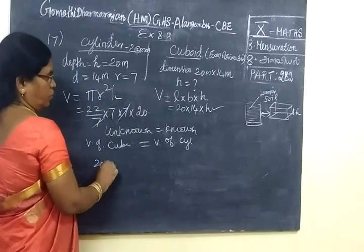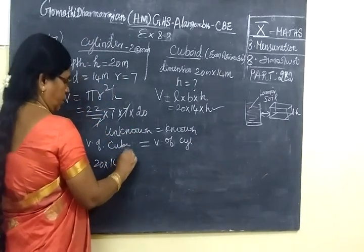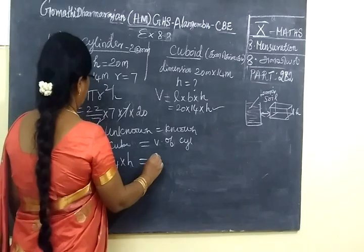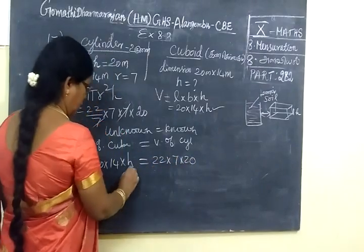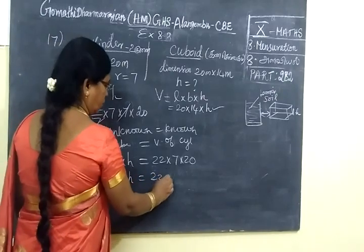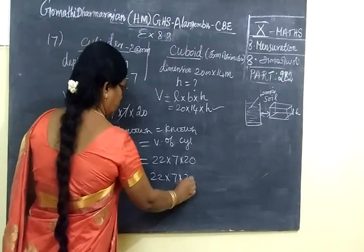So, for this you are writing 20 into 14 into S equal to 22x7x20. Here, therefore, S equal to 22x20.